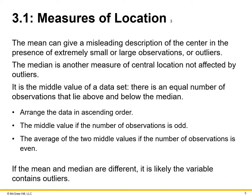The mean can give a misleading description of the center in the presence of extremely small or large observations, or outliers. In a large data set with a long list of numerical values, it can be unclear whether the mean or average is the right focus of the measurement.